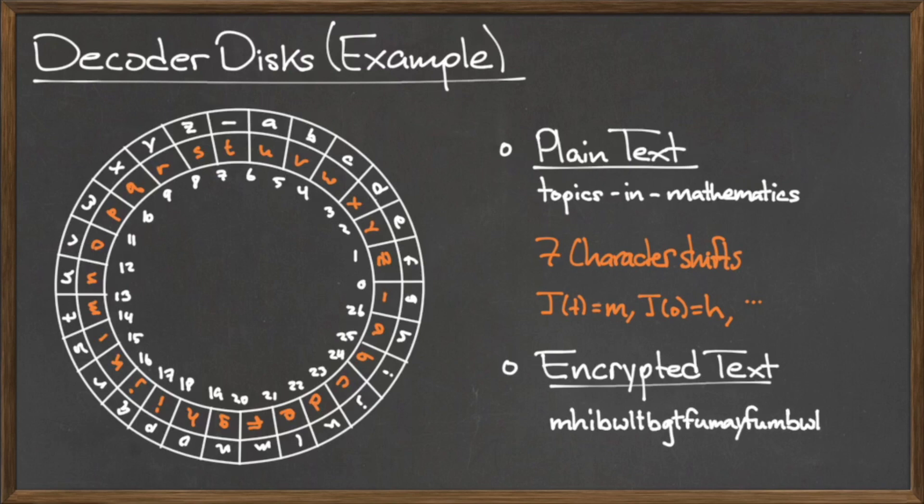In terms of the encryption function J, we can say that the image of T under J is M, the image of O under J is H, and so on. After encoding every character in our plaintext, we have the final encrypted message shown here.